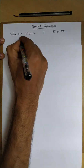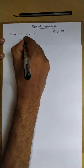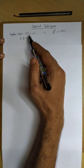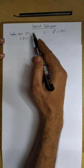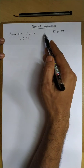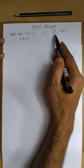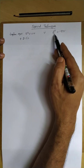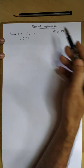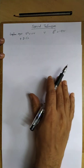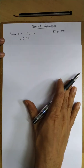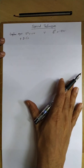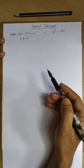So, Laplace equation plus boundary conditions gives us V, and we can solve a problem. We can find the electric field as the negative gradient. This is the straight method. Especially in most practical problems, the Laplace equation is used to solve the problem.